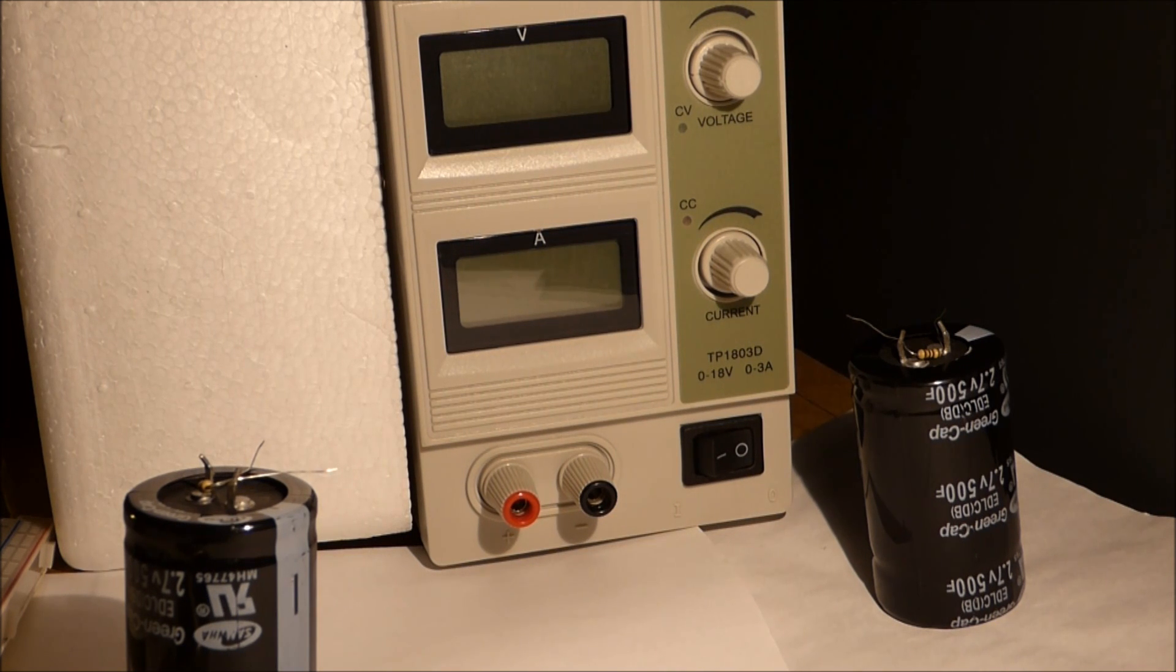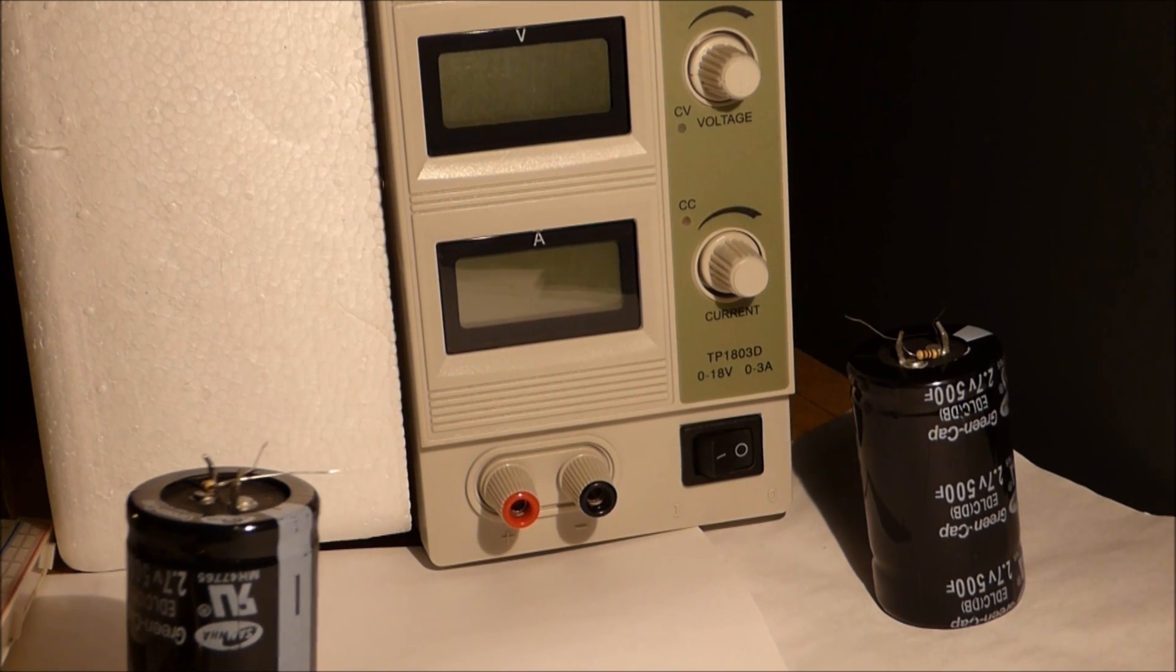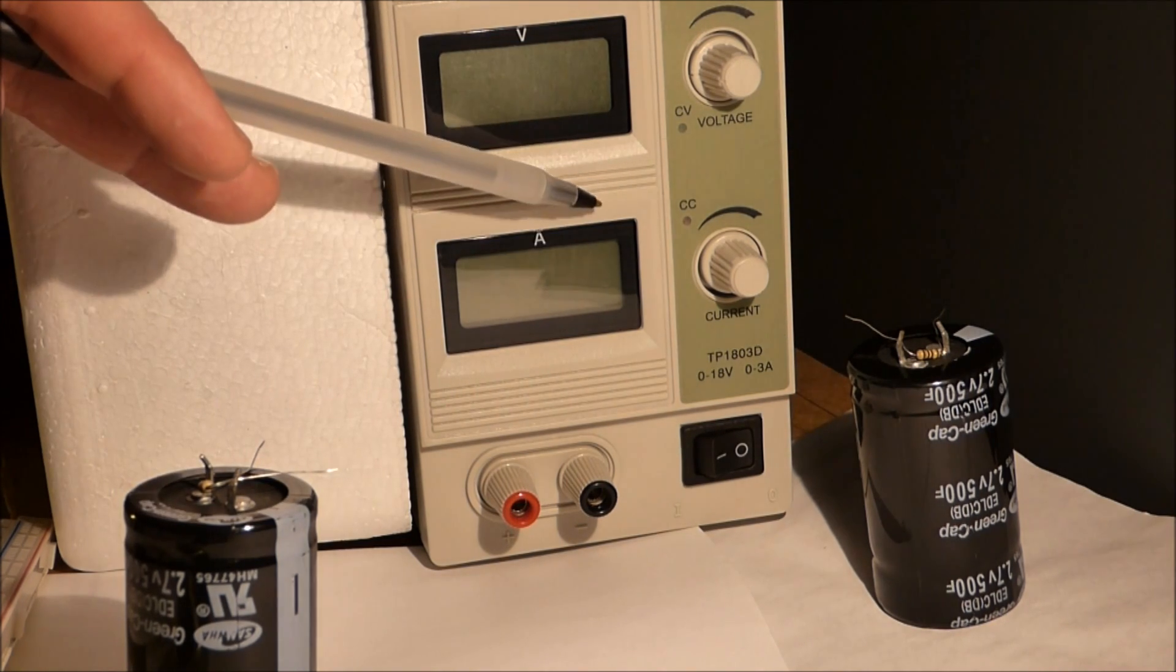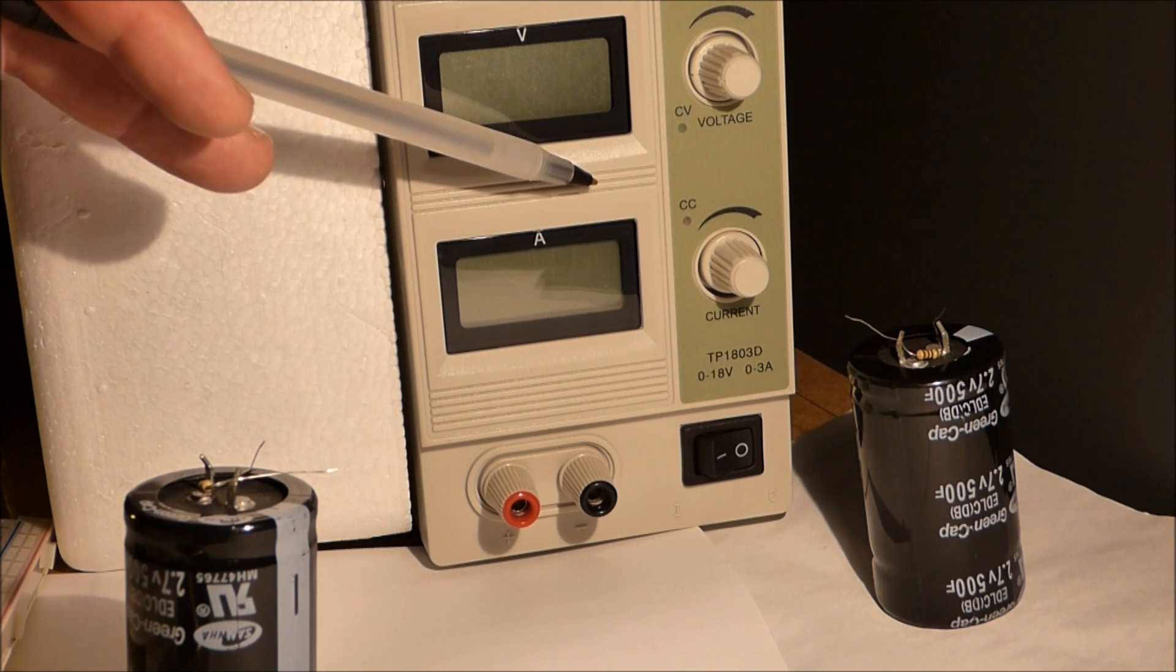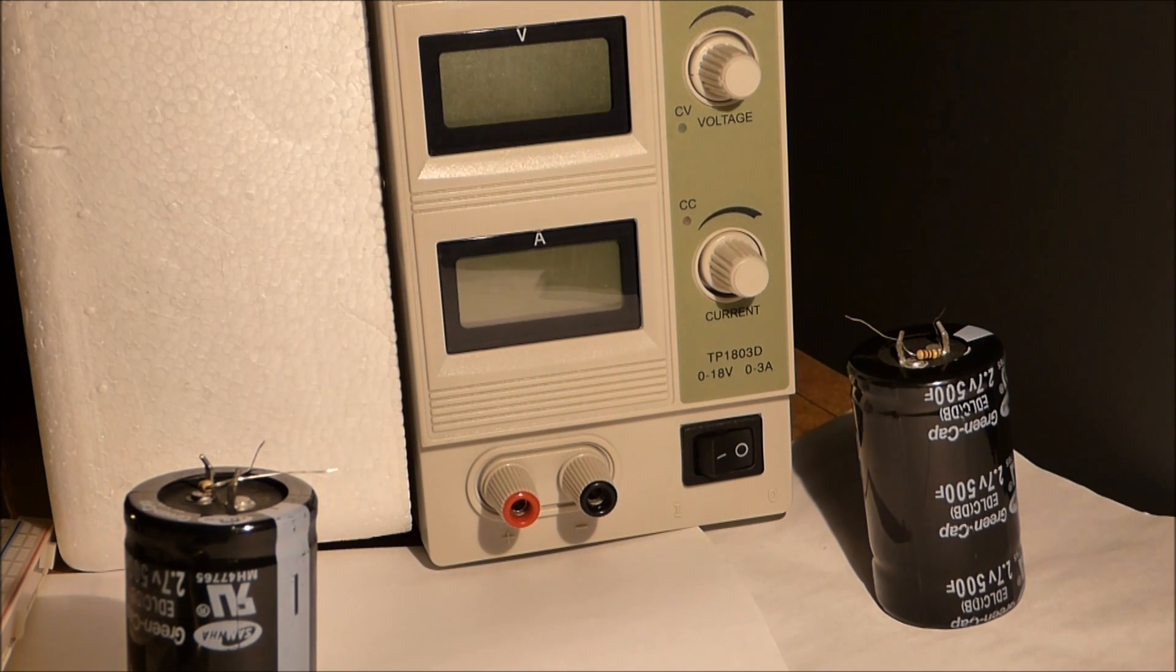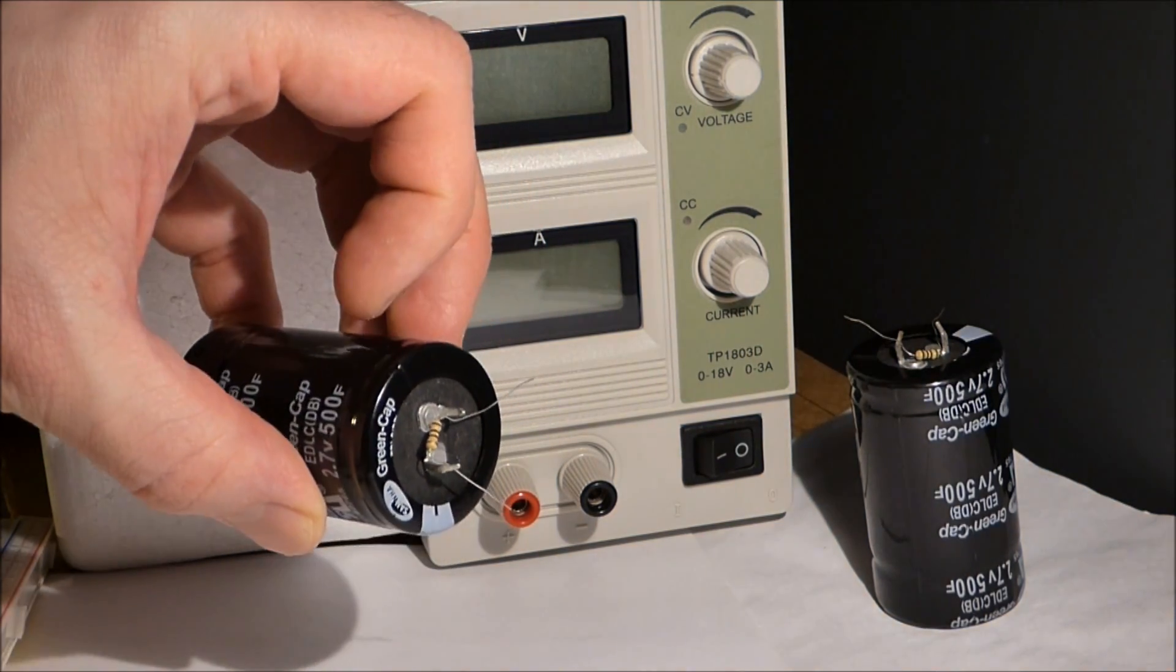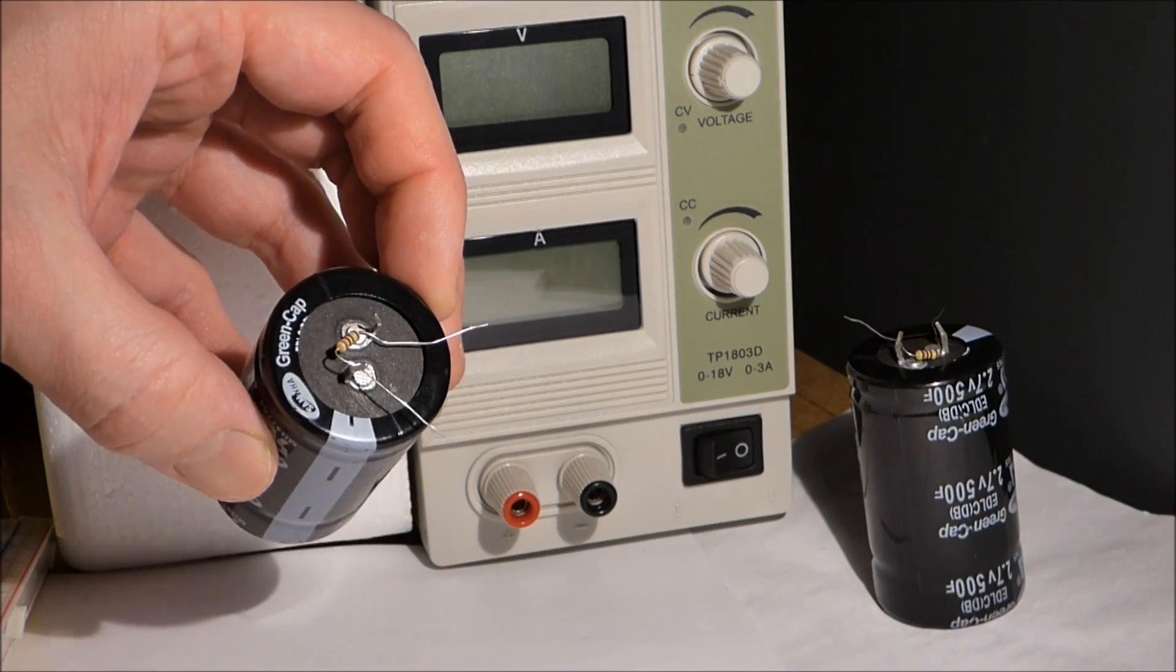This bench power supply, when you deliver power, you also set the maximum current that you will allow. Normally that's to protect components, but in this case the amount of current you set on this bench power supply will be to protect the power supply from applying too much current.